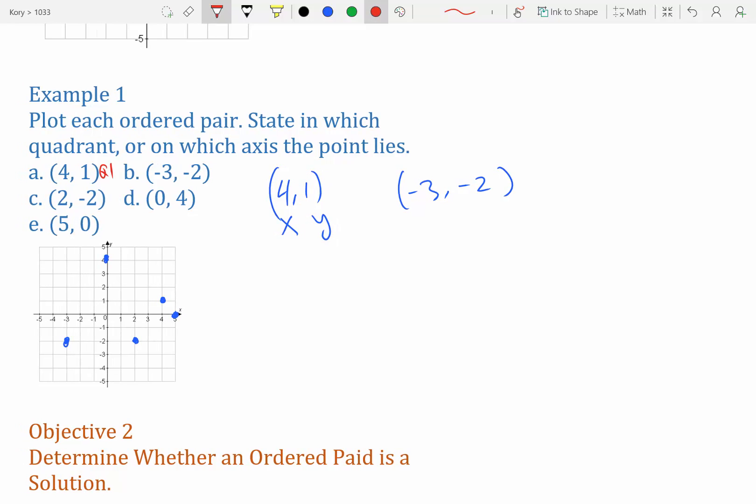Negative 3, negative 2 is down below here. That's quadrant 3. 2, negative 2 is quadrant 4. 0, 4, well that's on the y-axis.